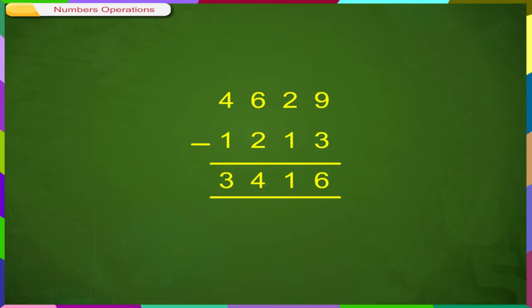Look at the subtraction problem here. 4629 is called the minuend. 1213 is called subtrahend. And 3416 is called the difference.